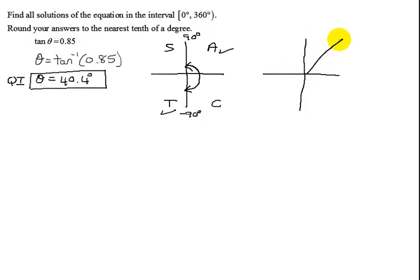So let's just draw my angle. Here's my theta. And remember, an angle in quadrant 1 is equal to its reference angle. So I know the reference angle for this angle is 40.4 degrees. Well, why did I find that? It's going to help me find my angle in quadrant 3.